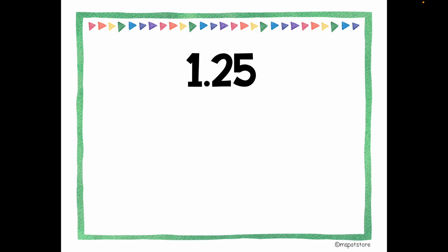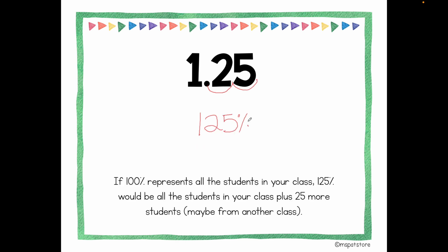How about 1.25 into a percent? Please pause the video and try it yourself. Now move the decimal point two places to the right: one and two. It will be 125 percent. Think about it this way: if 100 percent represents all the students in your class, 125 percent would be all those students plus 25 more, maybe from another class. Because I know some of you might be wondering — does 125 percent even exist? Yes, it does.